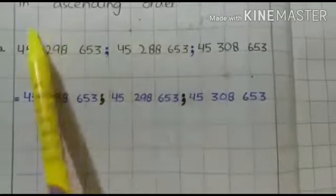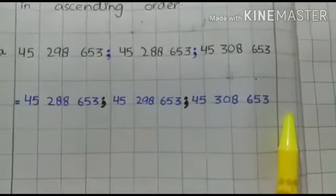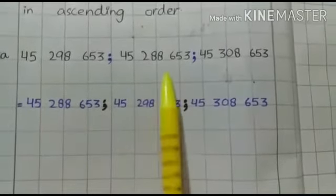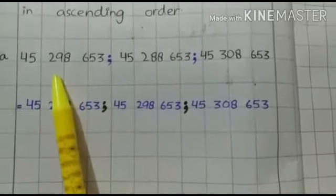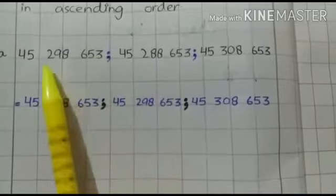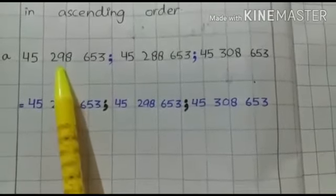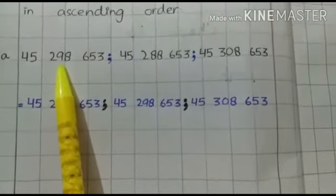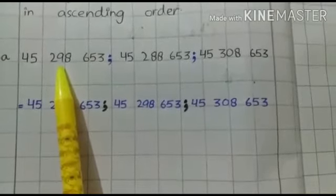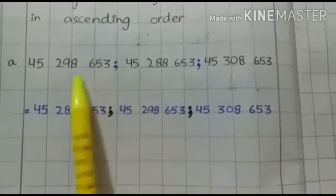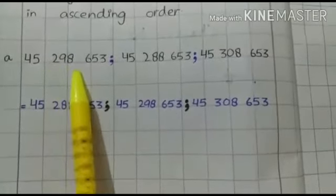It means the value with 3 is the greatest value. So we will write this last because in ascending order we go from smallest to greatest. So it means these 2 values with 2 in hundred thousands are smallest. One of these values we will write first. So now we move to the next digit which is in the ten thousands place, like 9 and 8.